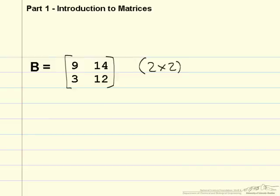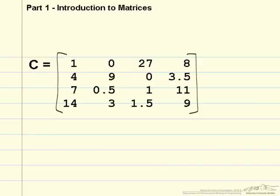For example, you can only find the determinant of a square matrix and you can only find the inverse of a square matrix. Here is matrix C. Matrix C is a 4 by 4 square matrix.